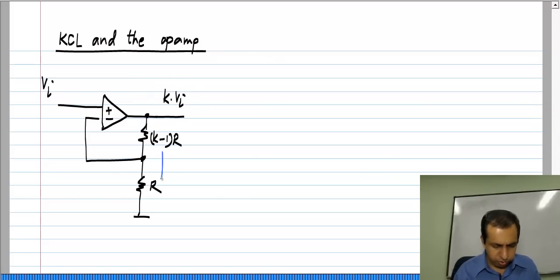Now, the current flowing through these resistors is Vi by R. It is KVi divided by the sum of these which is Vi by R. Alternatively, Vi appears here also so the current through this is Vi by R which also flows through that resistor.